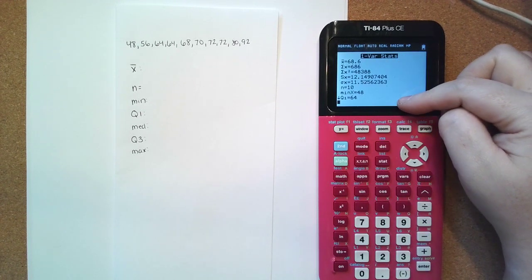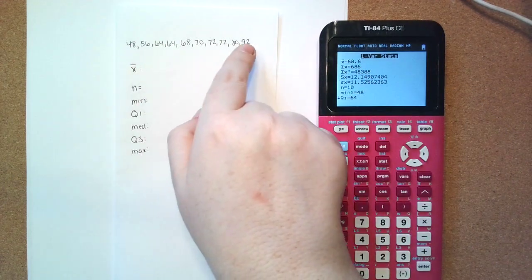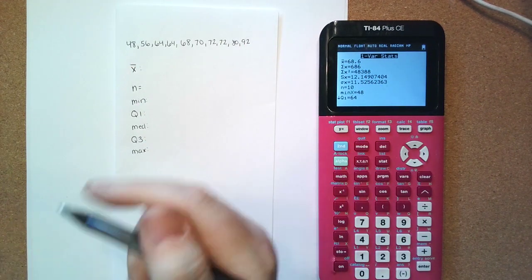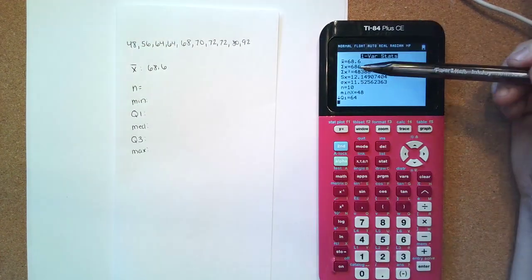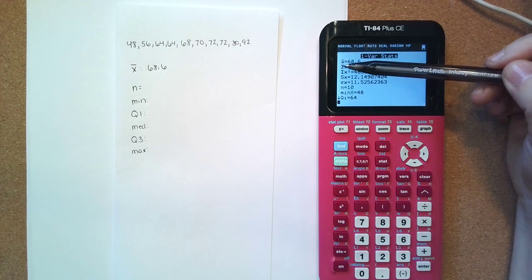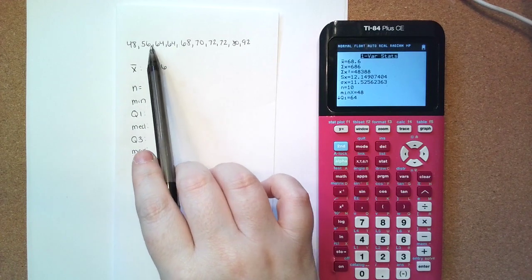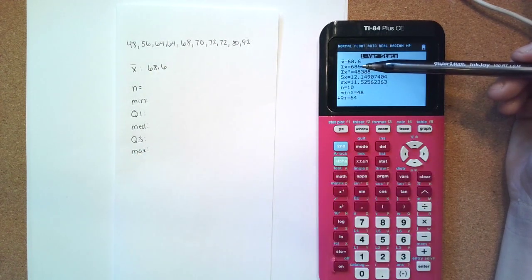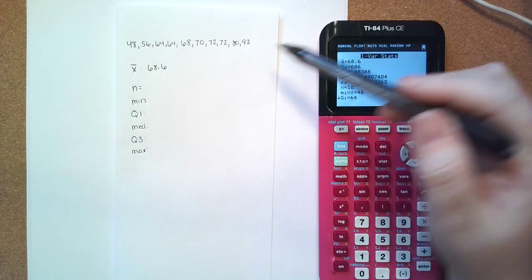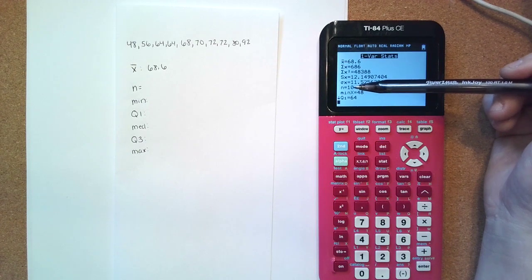So we have our one variable statistics. X bar represents the mean, so this is the mean of all of these data points. So X bar would be 68.6. The sigma X, so this is a big sigma X, is the sum of all of your data points. So if I did 48 plus 56 plus 64 all the way through, I would get 686. And then if I divided it by 10, because that was how many points there were, that's how we get our mean. So we have down here, n equals 10, that's the number of data points.